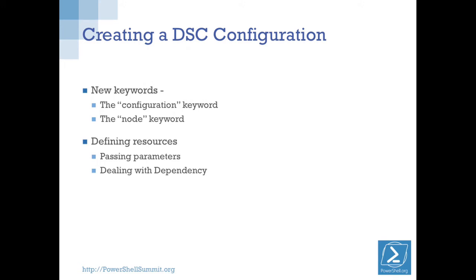Now let's look at some keywords. WMF4 introduced the 'configuration' keyword and the 'node' keyword, and in that context the 'Import-DscResource' keyword — it looks like a cmdlet but it's really a keyword. Configuration acts kind of like the function keyword but not exactly. Node is used inside a configuration to identify a particular machine or group of machines. We'll look at how we define resources, pass parameters to them, and create dependencies.